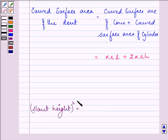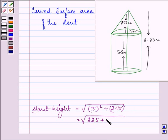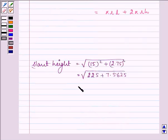The slant height of the cone is equal to √(r² + h²), which equals √(15² + 2.75²). That's √(225 + 7.5625) = √238.5625 = 15.25.